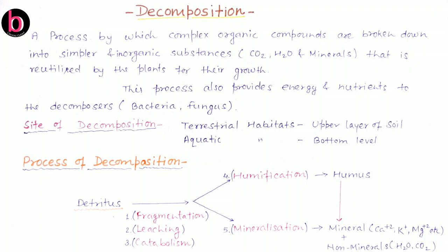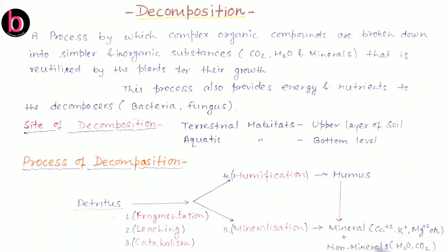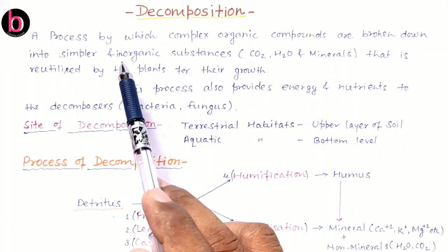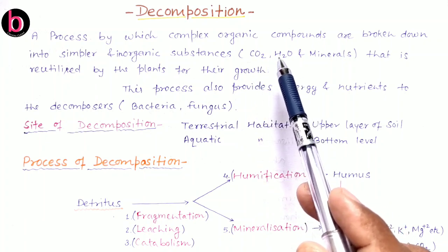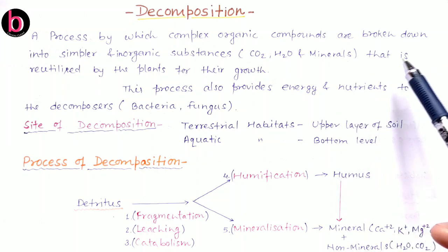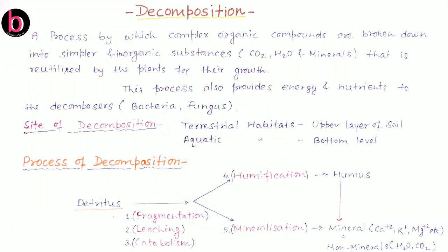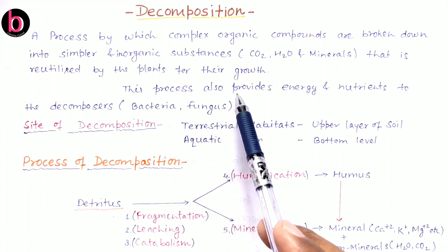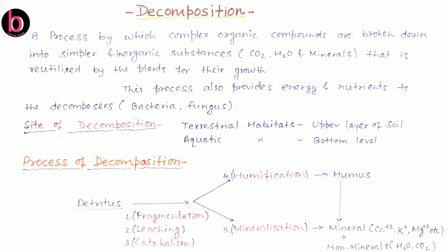So what is decomposition? Decomposition is a process in which complex organic compounds present in dead bodies of plants and animals are broken down into simpler inorganic substances — either non-mineral type like carbon dioxide and water, or mineralized type. These inorganic substances are further reutilized by plants for their growth, and during decomposition there is also a gain of energy and nutrients to the decomposers, that are bacteria as well as fungi.